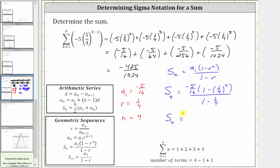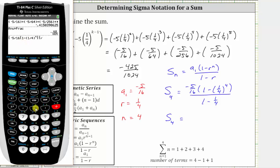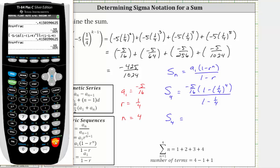Now let's go to the calculator and make sure we get the same result. Remember we'll have to put the numerator and denominator in parentheses: open parenthesis, negative five divided by 16, open parenthesis, one minus open parenthesis one divided by four, closed parenthesis raised to the fourth, then close parentheses for the numerator, divided by open parenthesis one minus one divided by four, closed parenthesis, Enter. We get the same decimal, and converting to a fraction gives us negative 425 over 1,024.